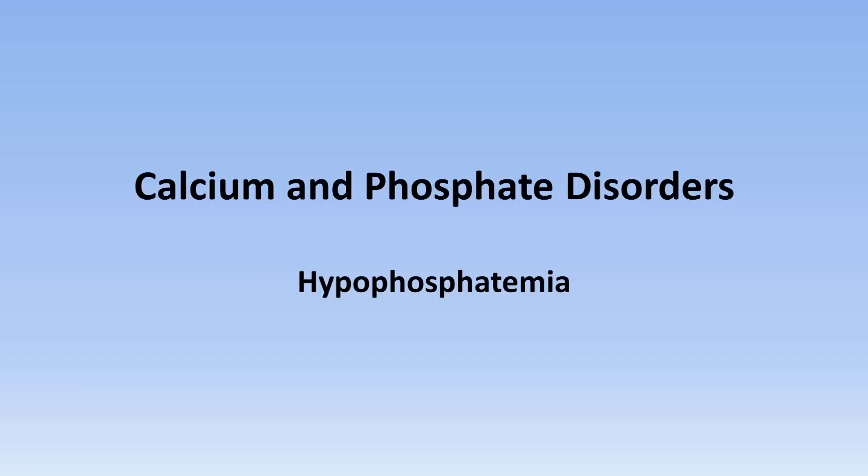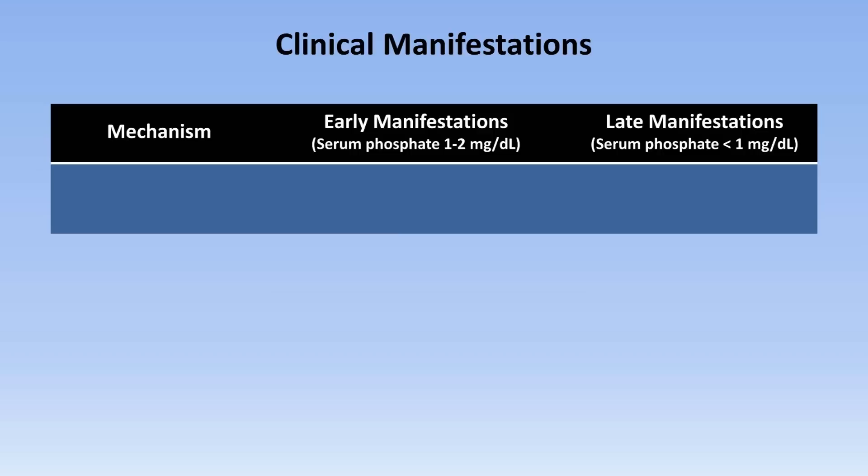This is the fifth and final video in this series on calcium and phosphate disorders. The topic is hypophosphatemia. The clinical manifestations of hypophosphatemia span every organ system, but they can predominantly be placed into one of three categories. Manifestations in each category can progress from a mildly symptomatic early stage to a more severe and potentially fatal later stage.